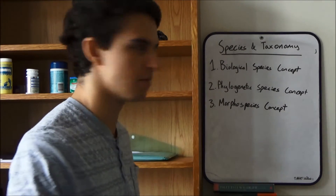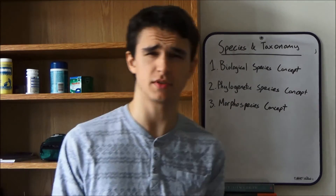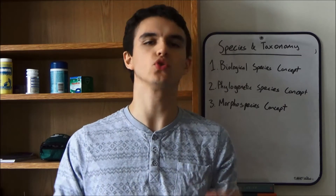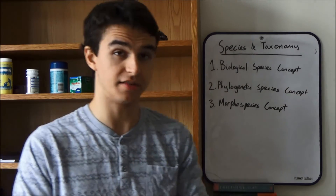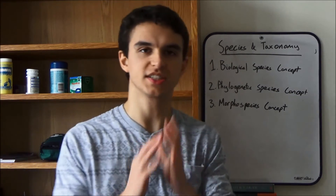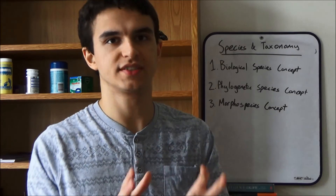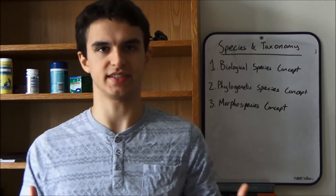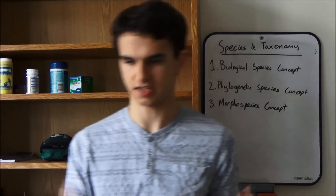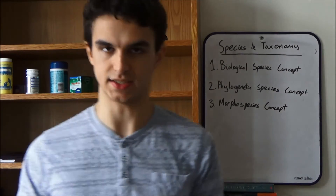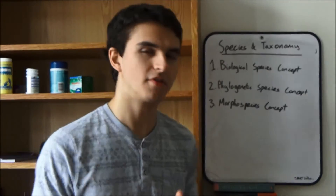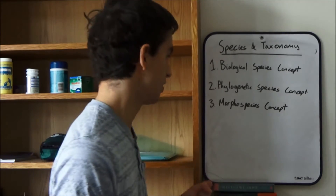The first one is the biological species concept. This is probably the one you're most familiar with if you do biology. It's all to do with reproductive isolation. If two species cannot interbreed to give fertile offspring, then they're considered to be good species — two distinct species. They're reproductively isolated. This was proposed by Ernest Mayr in the 1920s, and it's probably the most agreed definition for a species.